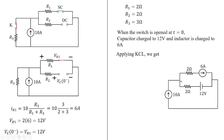You have R1 as 2 ohms, R2 as 2 ohms, the capacitor replaced by a voltage source, and the inductor replaced by a current source. Applying KCL at the particular node: 10 amperes is incoming, 6 amperes is outgoing through the inductor branch. We need to find the current going into the 12 volt capacitor source — that small current i equals 4 amperes by KCL.